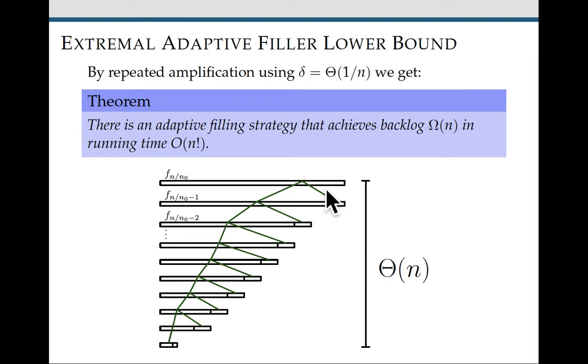It's because the delta is so small that we're not really recursing very much on this branch of the tree. Because this is basically delta n cups, which is a constant number of cups in particular. So if we have a linear number of levels of recursion, this is going to help us get our backlog order n. But also, that's a lot of levels. That's a really deep tree. So that's why it's going to take order n factorial time.